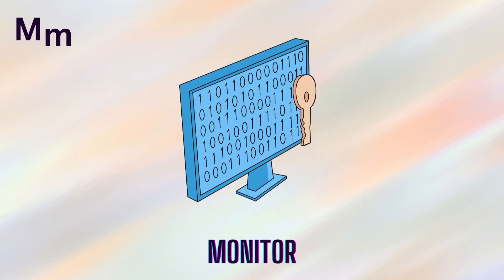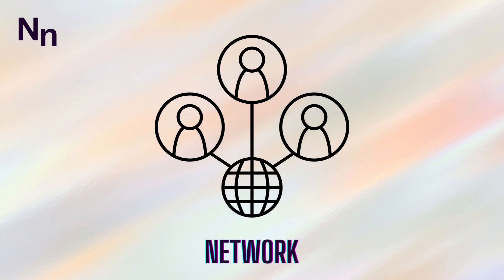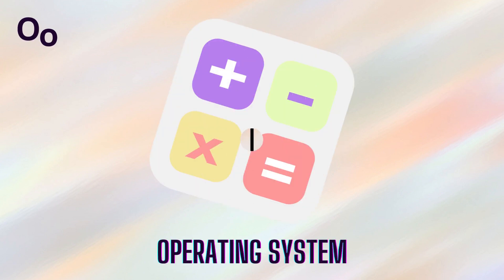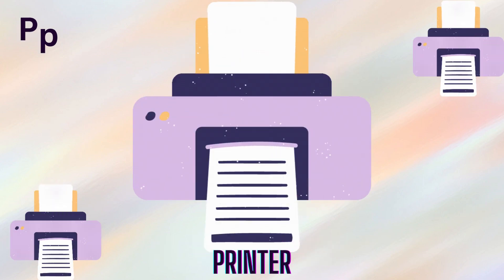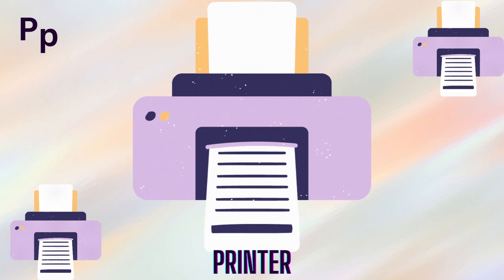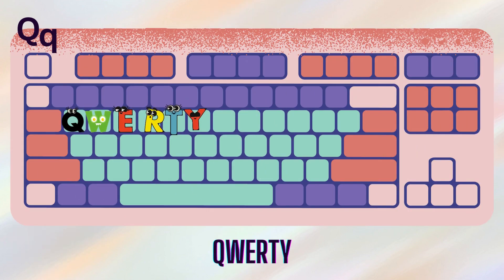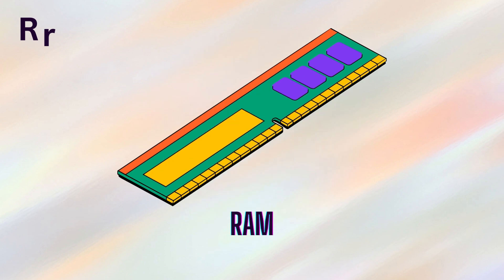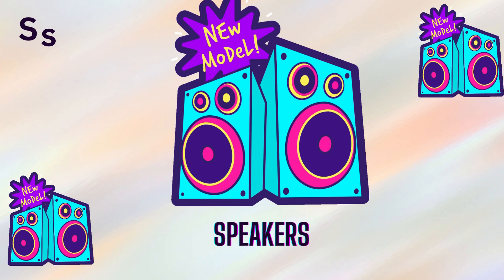M for monitor. N for network. O for operating system. P for printer. Q for QWERTY. R for RAM. S for speakers.